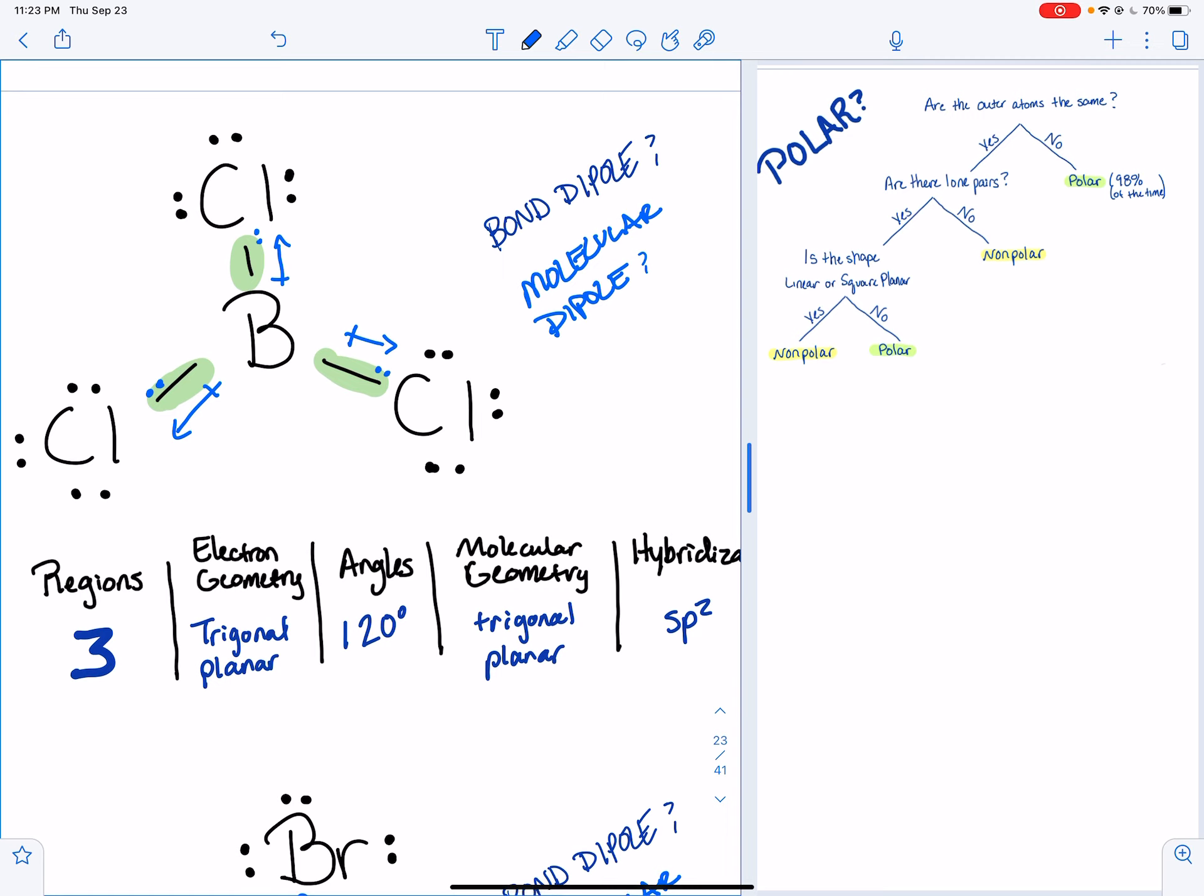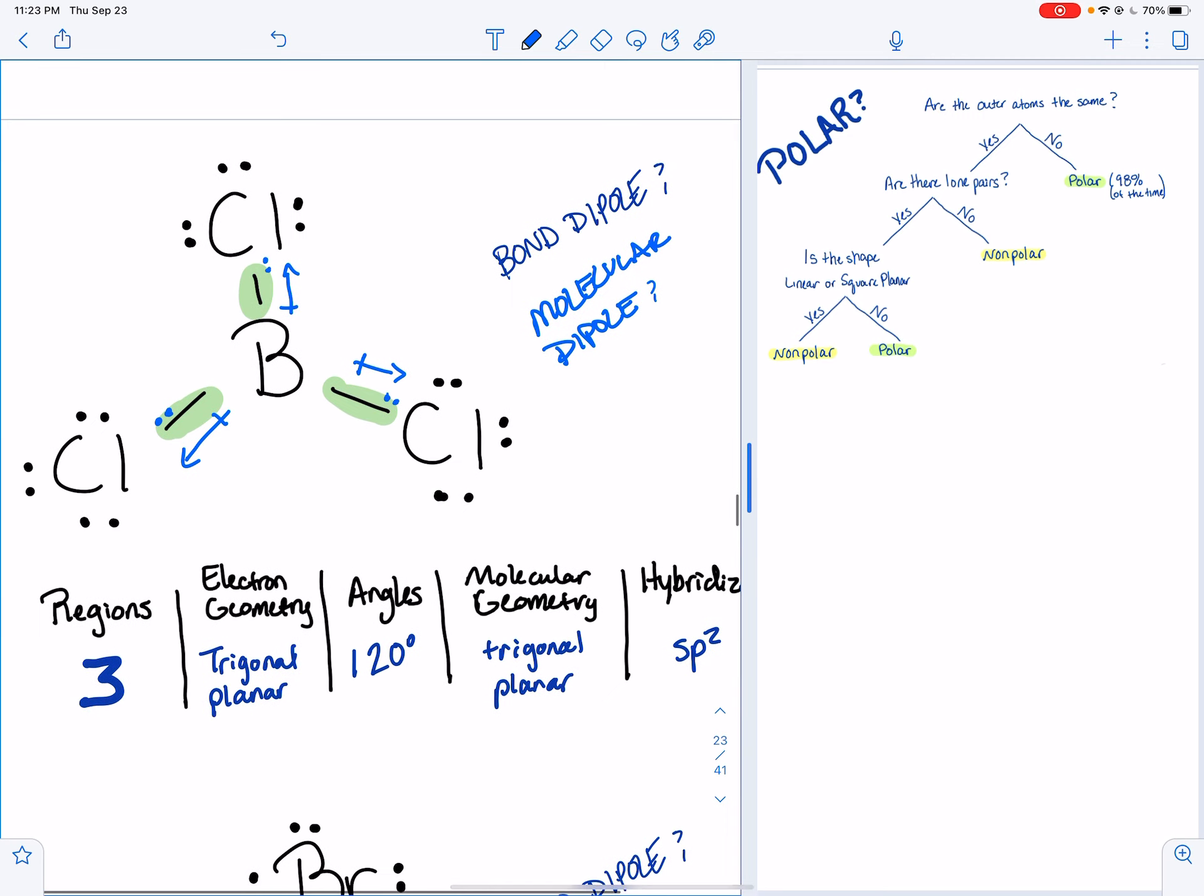All right, so in this one, again, they're all the same atom. And notice that I've moved the electrons in the bond like way close to the other atoms just to kind of see what's going on with them. And you can tell that there's a bond dipole. The atoms are different. So yeah, there is a bond dipole. It's not that strong, but there's one.